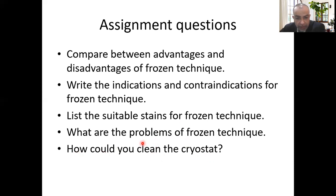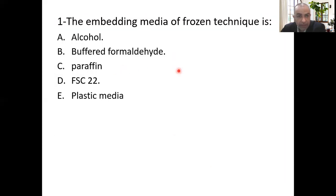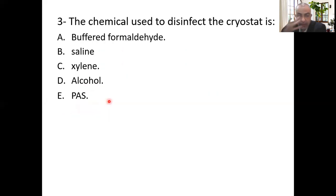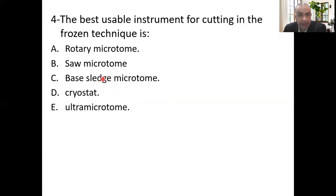How do you clean the cryostat? Seven steps — don't forget. MCQ: The embedding medium of the frozen technique is FSC 22. The adjusted temperature most suitable for most body tissues is minus 13 to minus 20. The chemical used to disinfect the cryostat is alcohol — we use hypochlorite, 70% alcohol, and 100% absolute alcohol. The best instrument for carrying out the frozen technique is the cryostat.